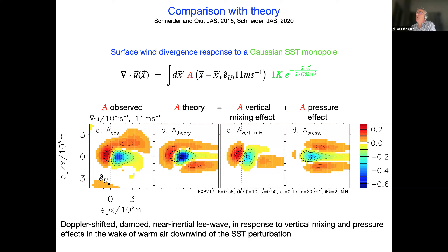This is a completely linear theory — a linearization of the Ekman layer around the background wind. We can look at the vertical mixing and pressure effects separately. If we only look at the vertical mixing effect, you see the dipole. If you only look at the pressure effect, you see this long wake with negative values of surface wind divergence to the lee, surrounded by positive values on both sides. That's the sort of dynamics we have here.